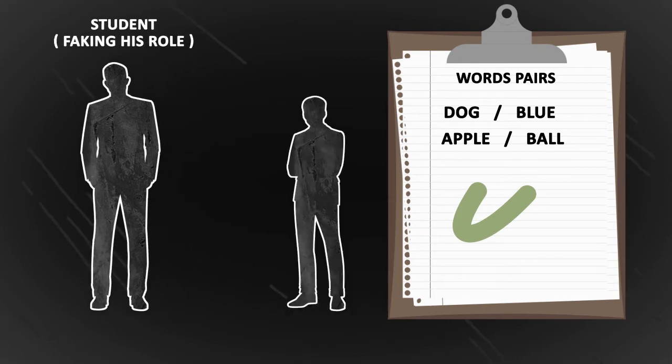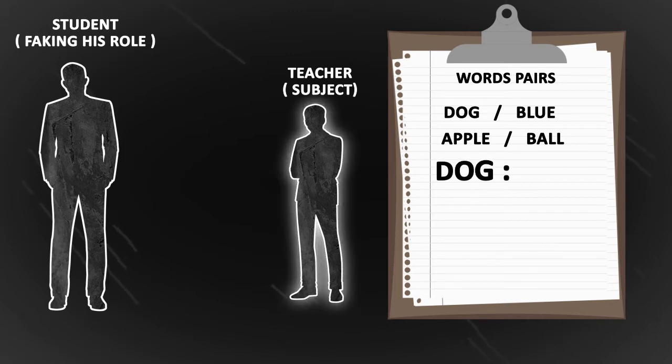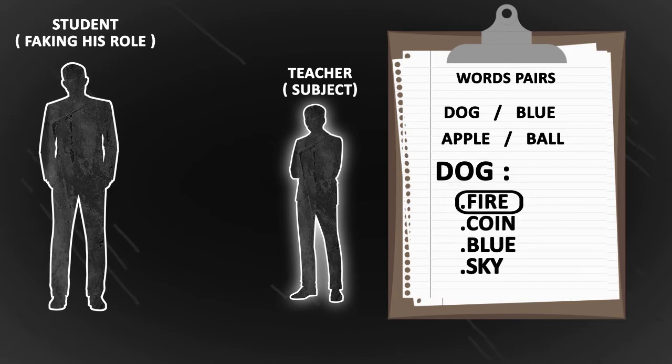After he has learned the list, the teacher, who is really the subject, will test him by naming a word and asking the student to recall the pair that it was associated with. So, for example, the teacher would tell him dog, then give four possible answers, and then the student would have to remember which one is correct.